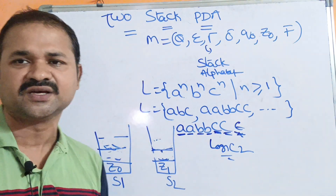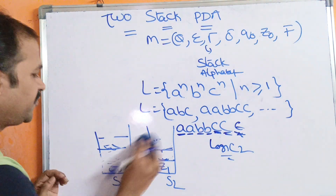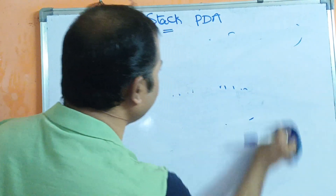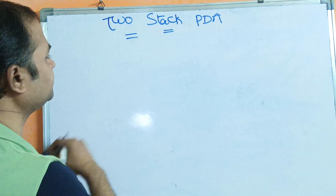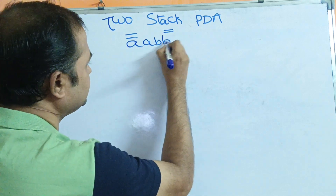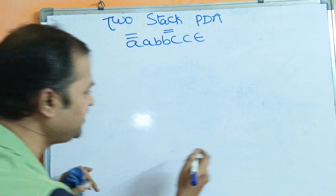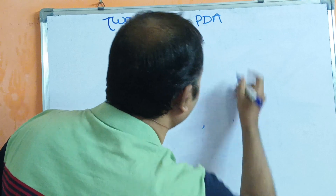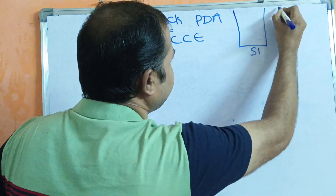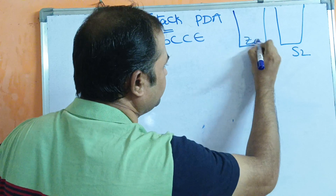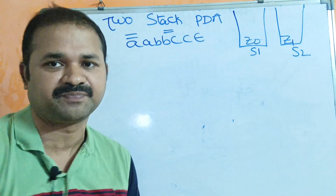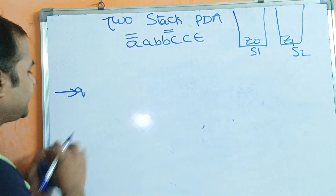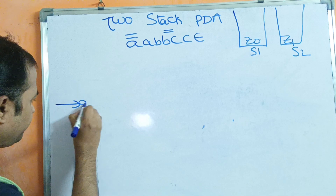Now let us implement Logic 1 — it is somewhat simpler. Let us take the input string AABBCC with epsilon at the end. We have stack 1 with topmost symbol Z0 and stack 2 with topmost symbol Z1. Initially we are at state Q0.